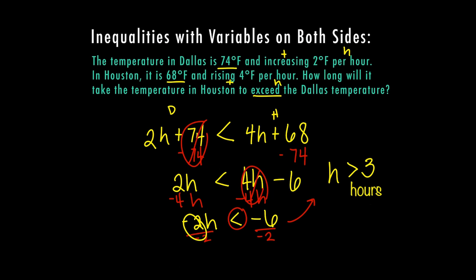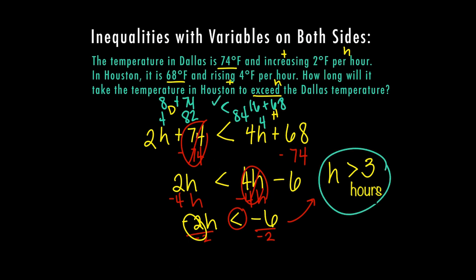To test this out, I'll take a number greater than 3 — I'll put in 4. On the Dallas side: 2 times 4 is 8, plus 74 equals 82. On the Houston side: 4 times 4 is 16, plus 68 equals 84. I want to make sure the left side is less than the right side: 82 is indeed less than 84. So this is correct — and there is our answer.